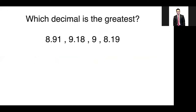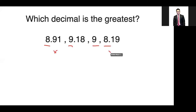Let's try to identify the greatest decimal. Again, we need to look at the highest place value, which is the ones place. In this given, we have an 8, a 9, a 9, and an 8. Technically the 8s are now out of the picture because 9 is greater than 8.